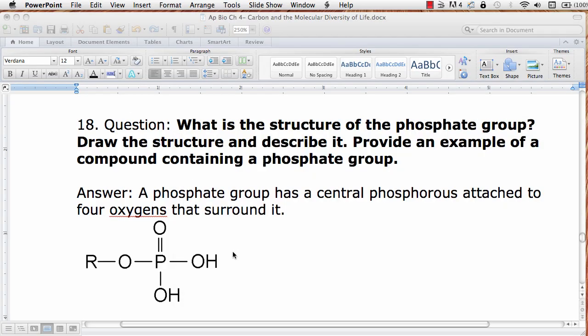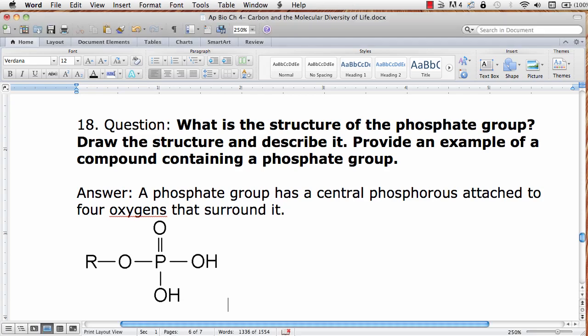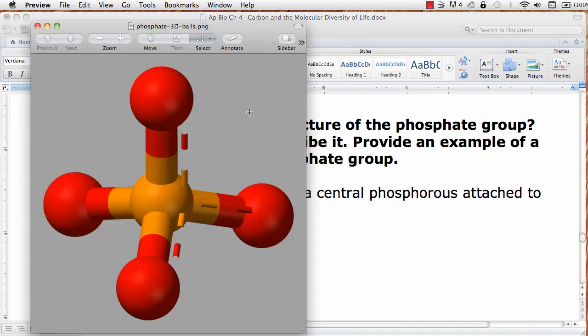What is the structure of the phosphate group? It has a central phosphorus that is attached to four oxygens that surround it. The 3D ball and stick figure or picture image of a phosphate group looks like this: a central phosphorus and four oxygen atoms that it is attached to.